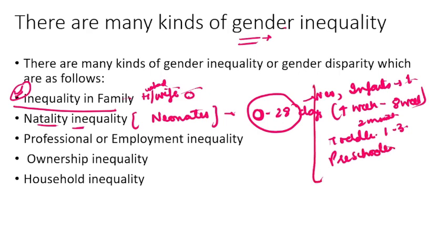Even among neonates there is inequality. Looking at survival data — how many female neonates survive versus male neonates — if you see health conditions, which children receive more health attention: the male baby tends to get speedier attention. So inferiority and superiority starts right from the neonate stage; inequality starts there itself.